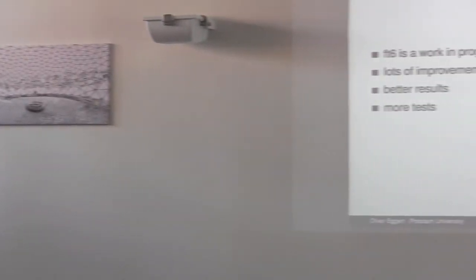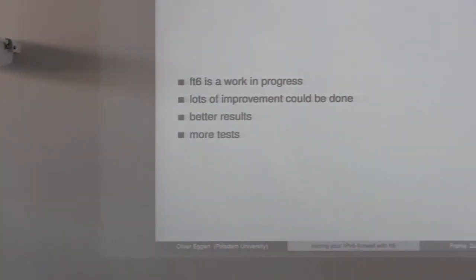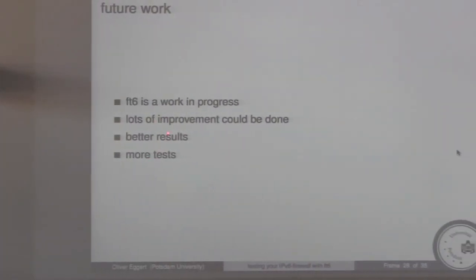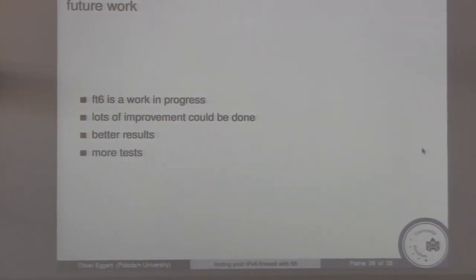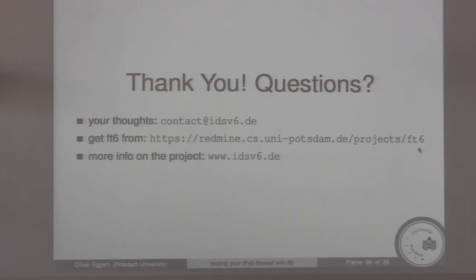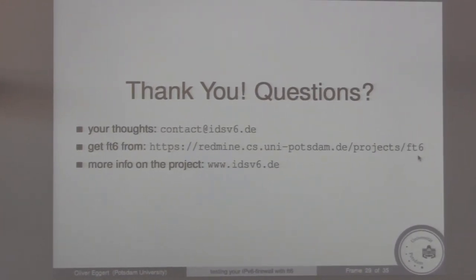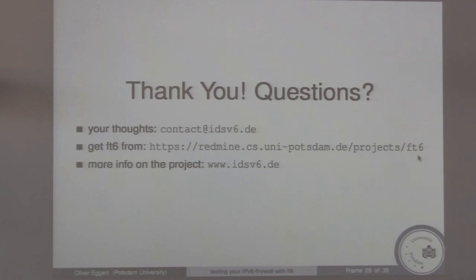FT6 right now is a work in progress. There are lots of improvements that could be done — better results, and if anyone has a great idea how to remove the yellow, that would be great. We could also write more tests. We'd like you to check it out at redmine.cs.uni-potsdam.de/project/FT6, and your thoughts are appreciated at the provided email address. Thank you.